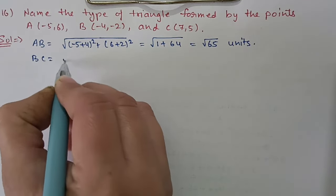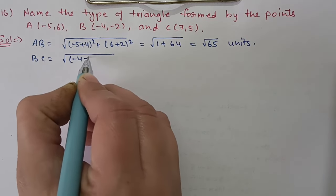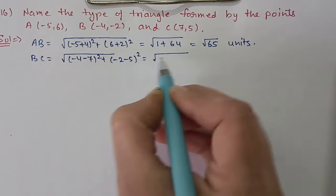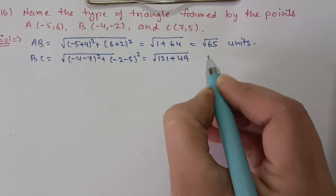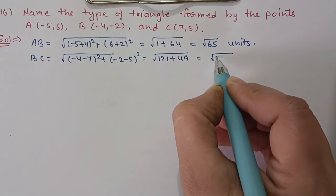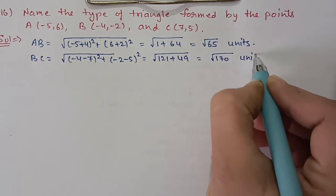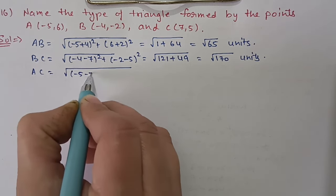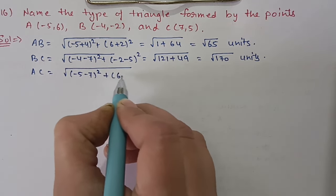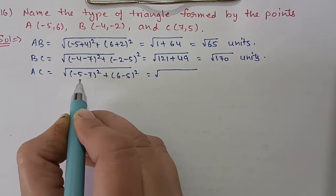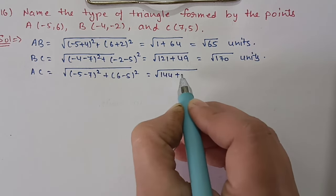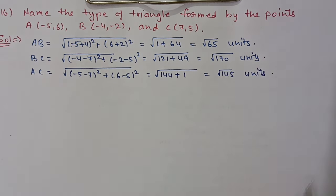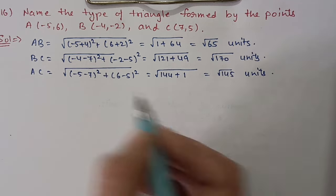Second side BC = √((−4−7)² + (−2−5)²) = √(121+49) = √170. Third side AC = √((−5−7)² + (6−5)²) = √(144+1) = √145. All three sides are different, so this is a scalene triangle. Therefore triangle ABC is a scalene triangle.